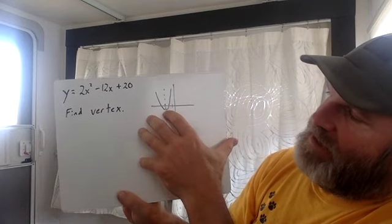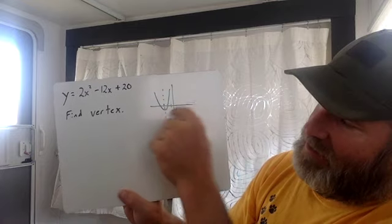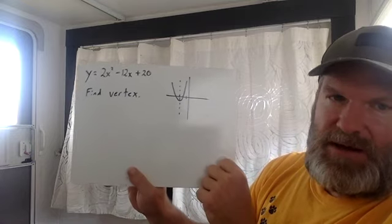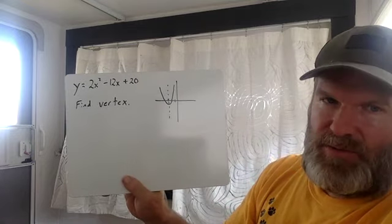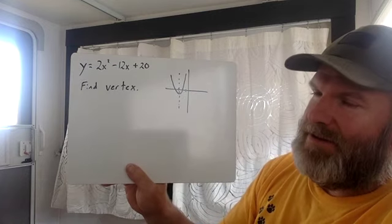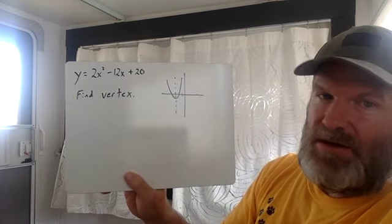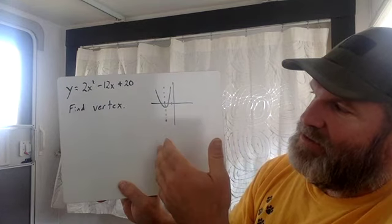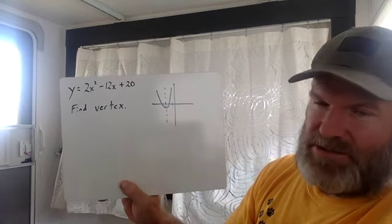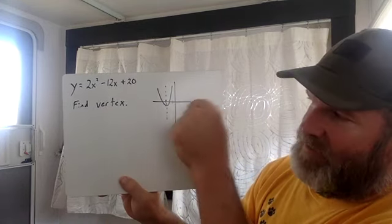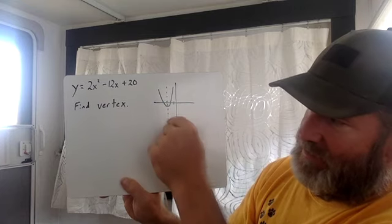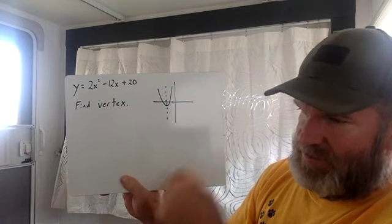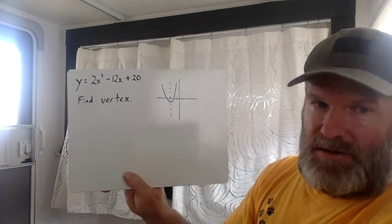So the vertex is just the point that's in the middle of the parabola at the very bottom. That point is going to be an ordered pair, an x, y coordinate. And the x coordinate is always going to be on the axis of symmetry. So if your axis of symmetry is at negative three, then your vertex is negative three comma your y coordinate.